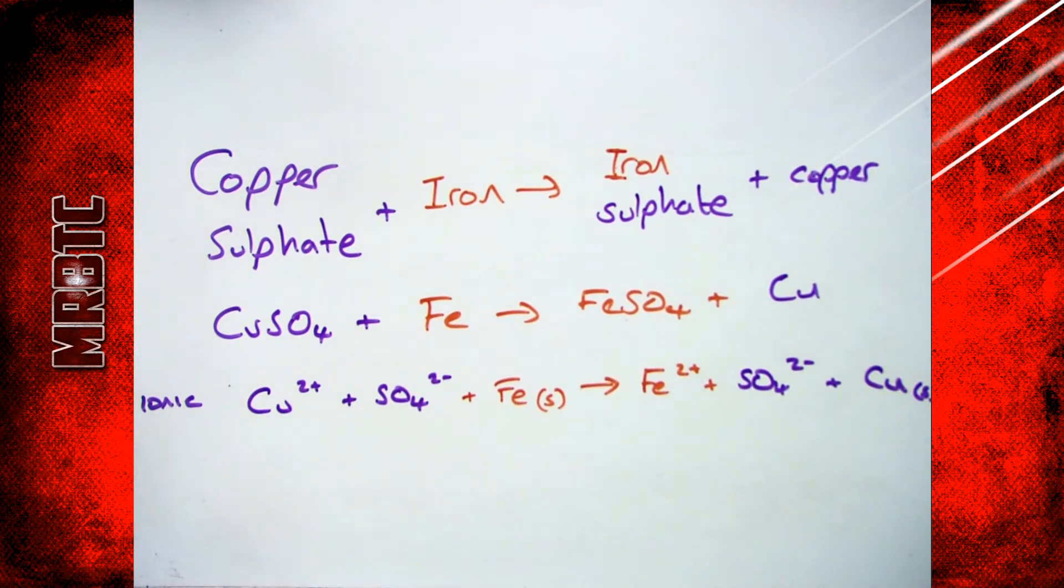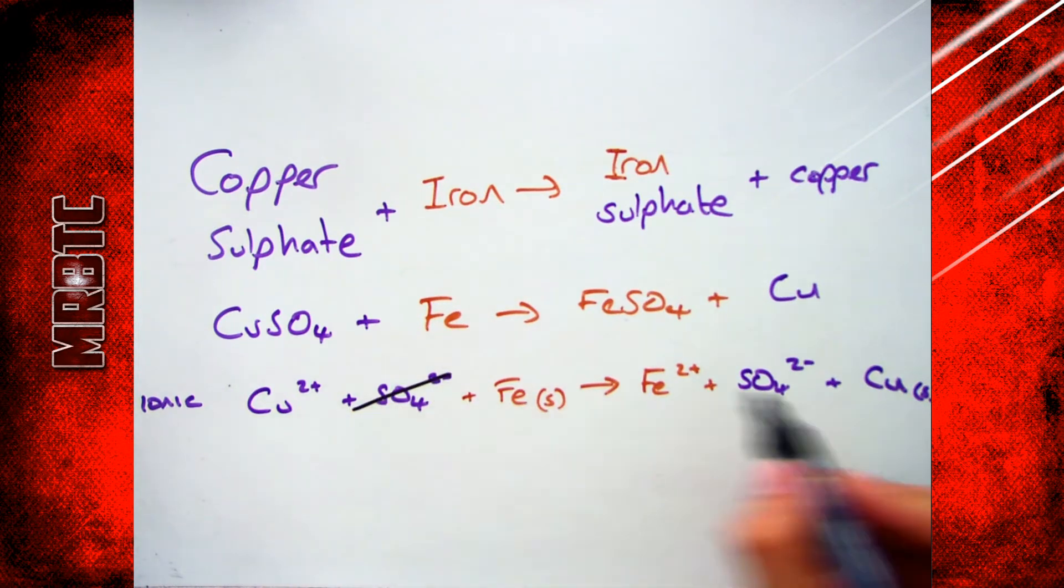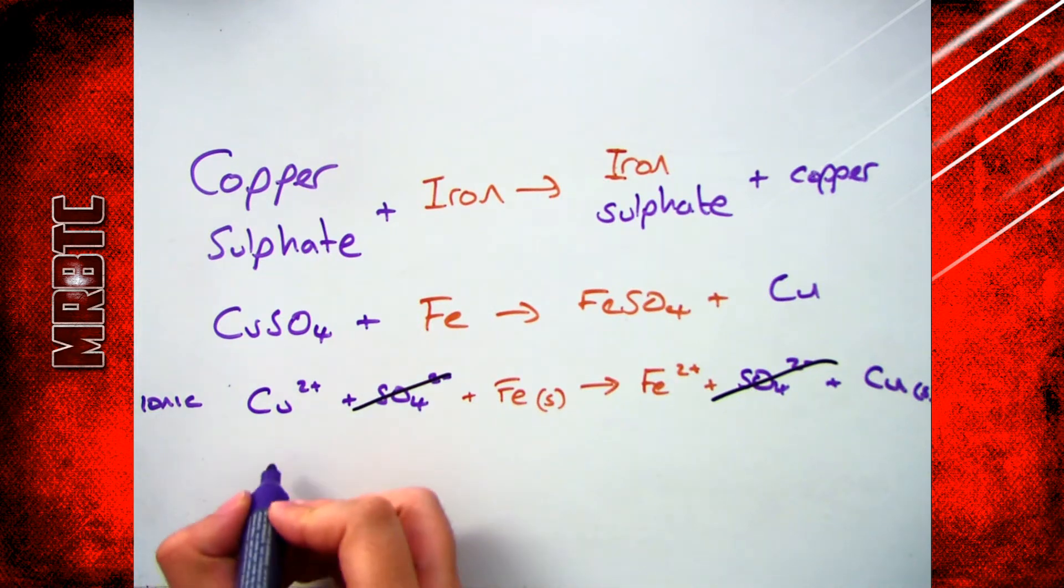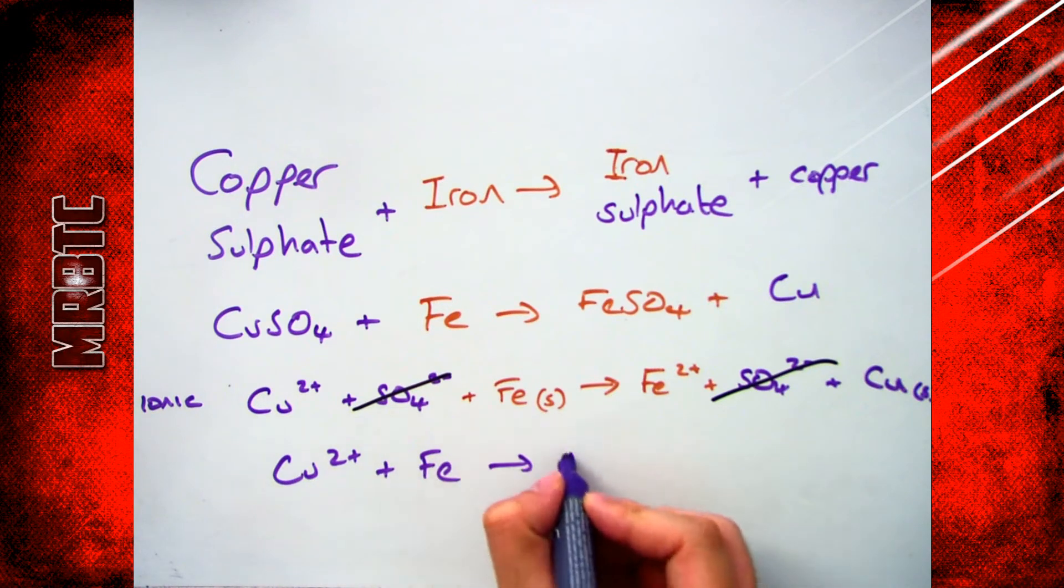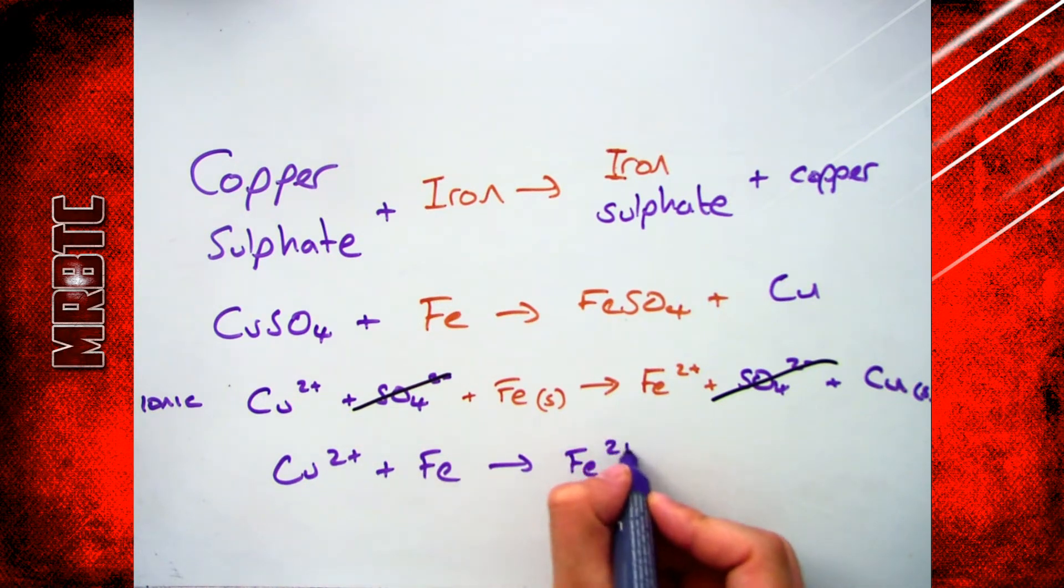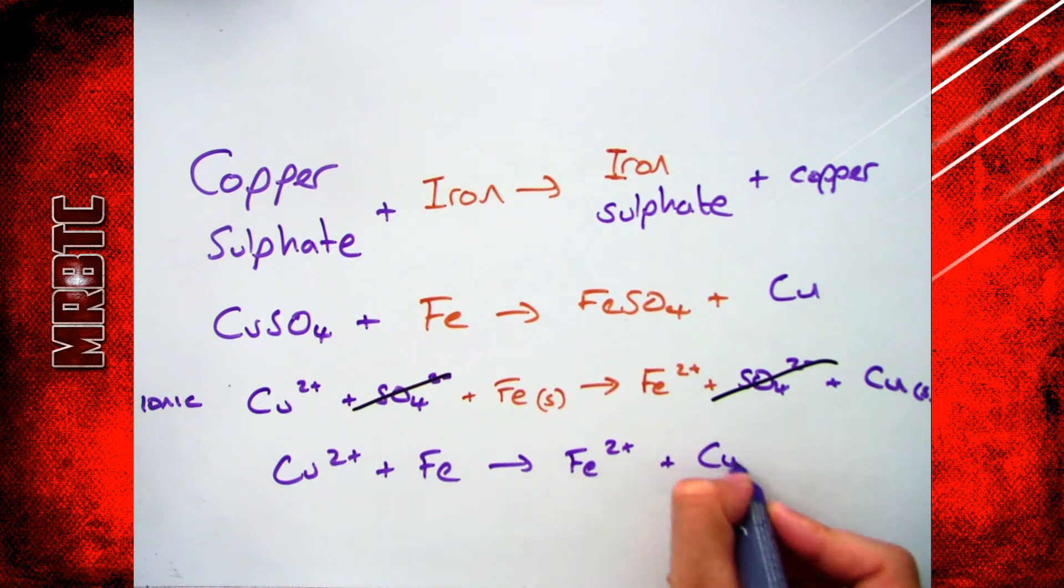The next thing I need to do is remove the things that are the same on both sides, which in this case is my sulfate SO4 2- ions. I can then rewrite it without those ones in, so I start off with Cu2+ I add Fe which is my solid and I go to Fe2+ and end up with Cu which is my solid, and that is my ionic equation.